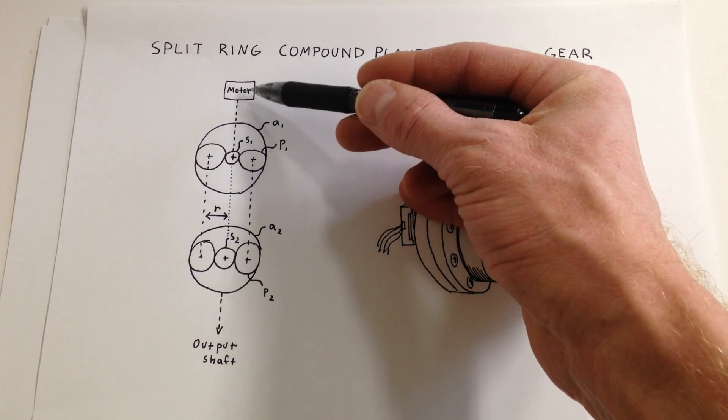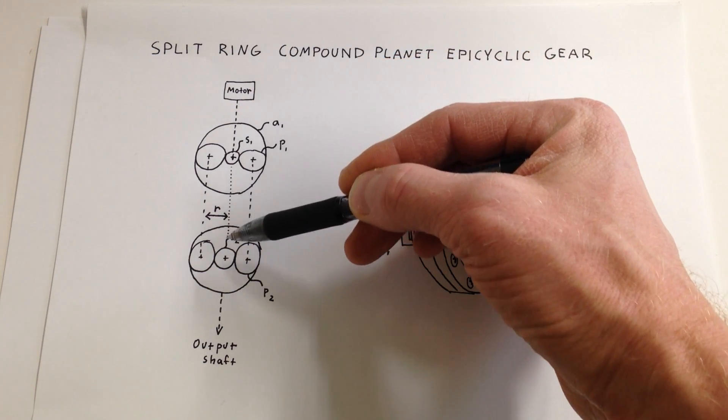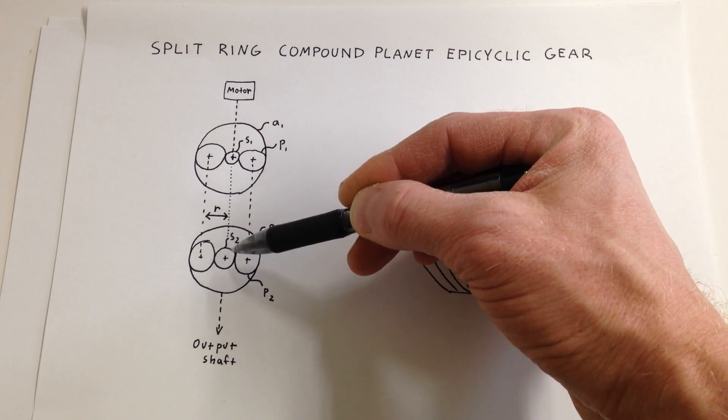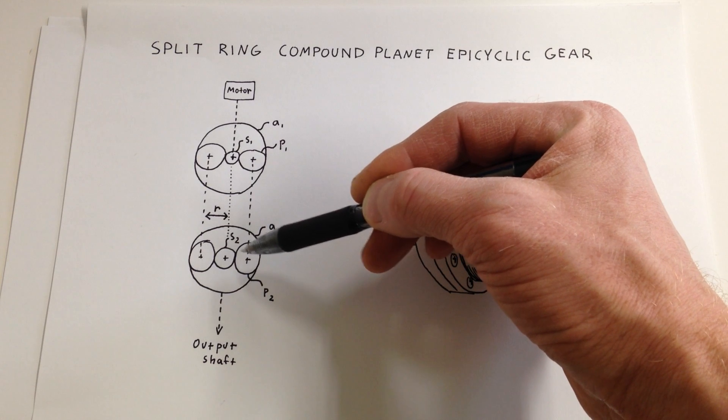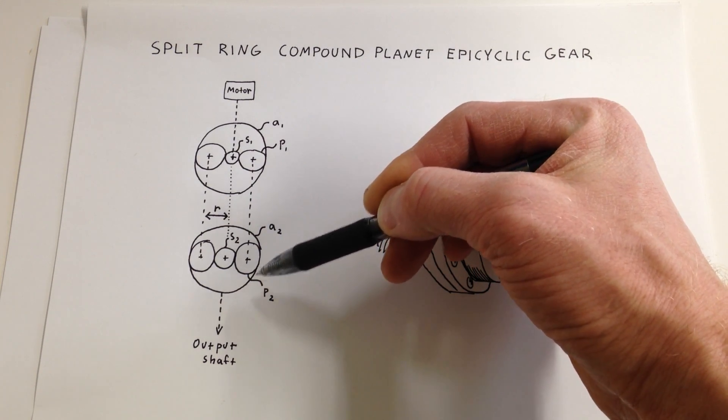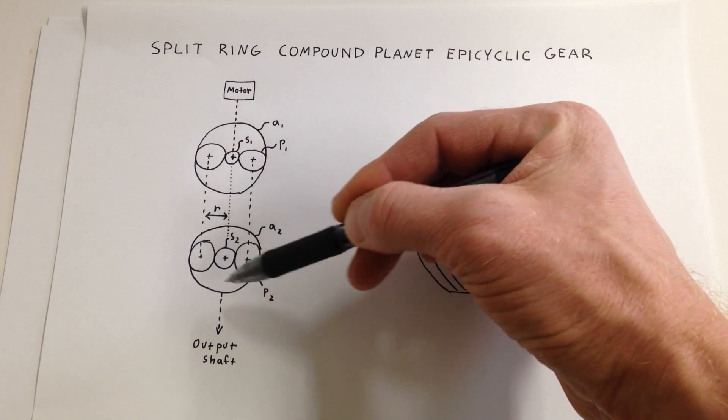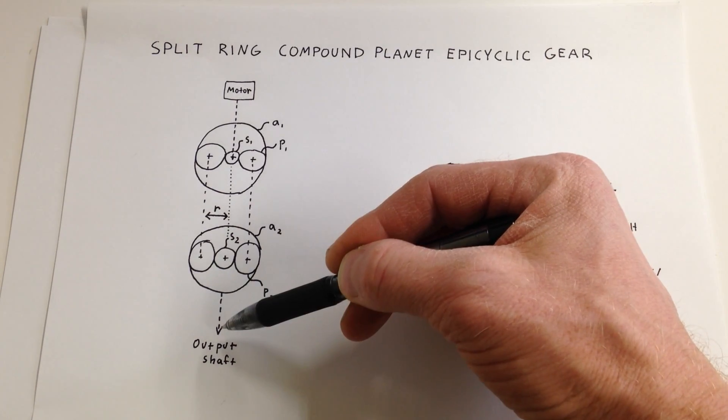One is attached to the motor. The second one, interestingly enough, is attached to nothing. It sits there as an idler to kind of hold the gears in place and spread them against the inner wall of the second annulus, and the entire second annulus rotates as the output shaft.